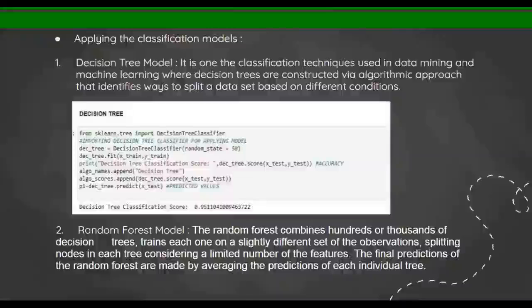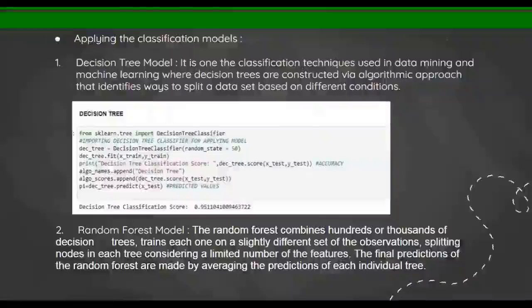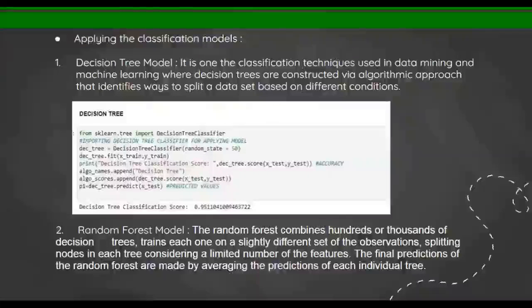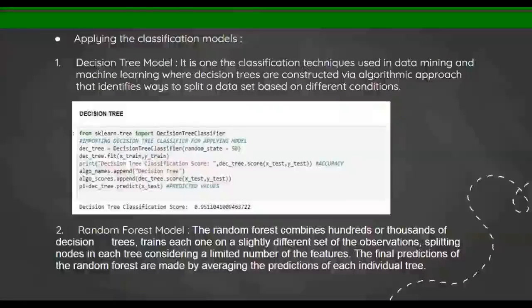Now applying the classification models. First, decision tree model: it is one of the classification techniques used in data mining and machine learning where decision trees are constructed with algorithmic approach that identifies ways to split a dataset based on different conditions. In decision trees we are making a tree splitting among the attributes given to it, and the last node consists the decision and the second last node consists the labels.